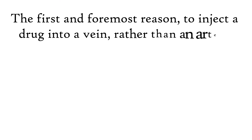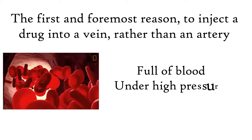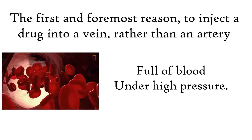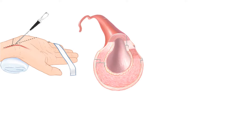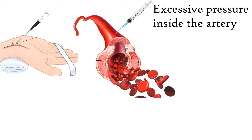The first and foremost reason to inject a drug into a vein rather than an artery is that the arteries are full of blood under high pressure. If injection is given from an artery, due to excessive pressure inside the arteries, the blood may outflow, which will result in blood loss.